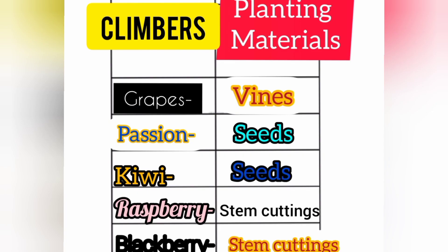We have the climbers and planting materials. For grapes we plant vials, passion we plant seeds, kiwi we plant seeds, raspberries we plant stem cuttings, and blackberry we plant stem cuttings.